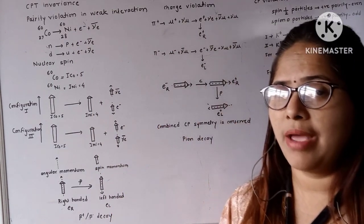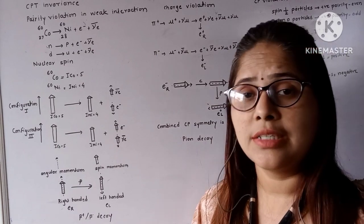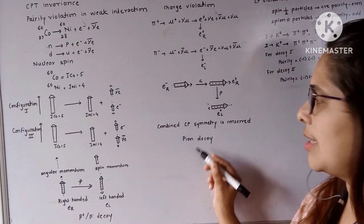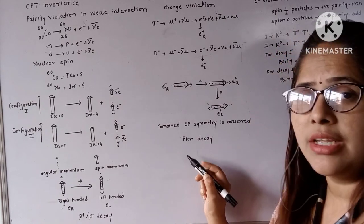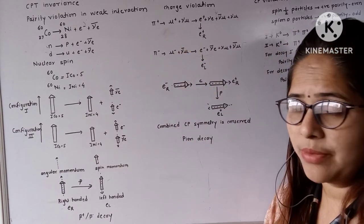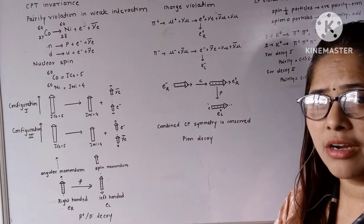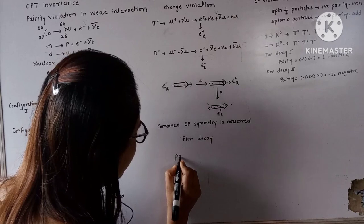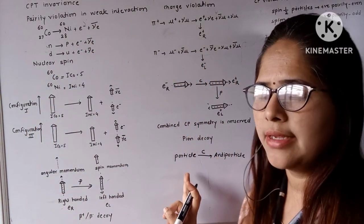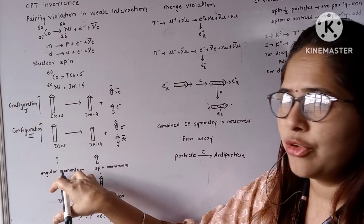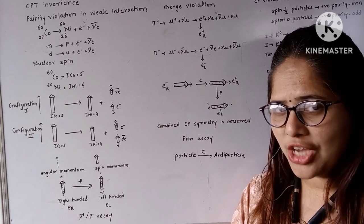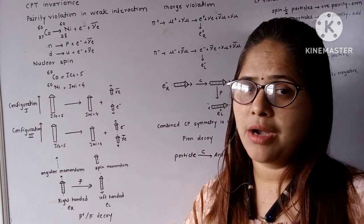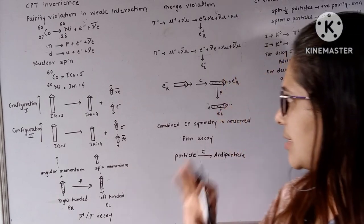Along with parity, charge is also violated sometimes in a weak nuclear interaction. The pion decay is an example of charge violation. The charge operator converts a particle into its antiparticle — it has no effect on spin momentum or angular momentum, but converts charge from positive to negative or negative to positive.